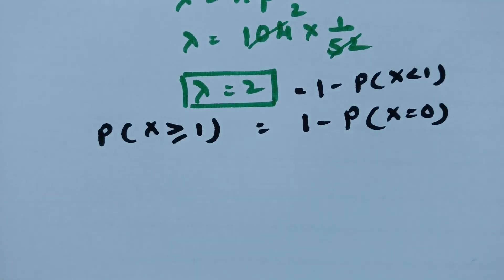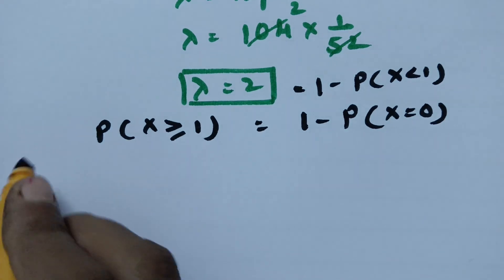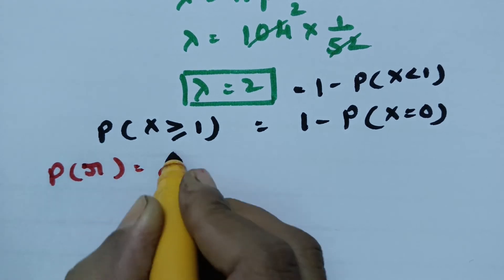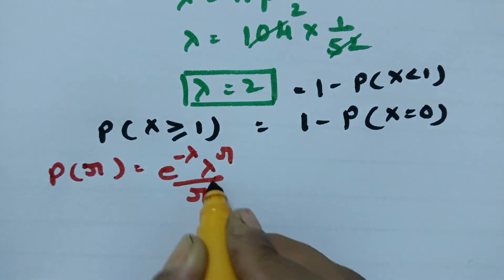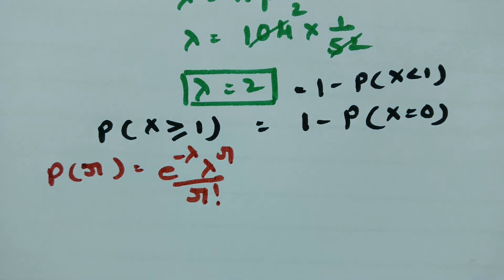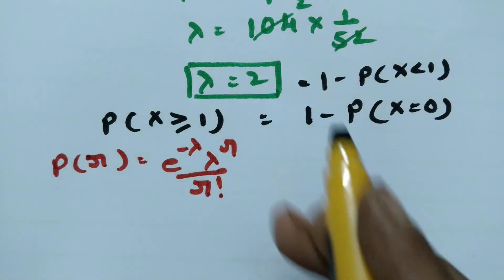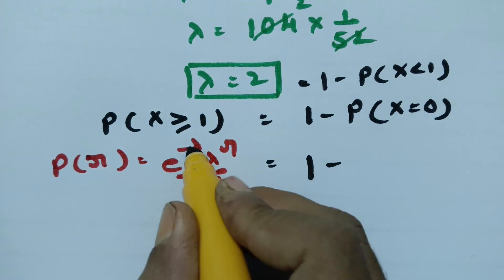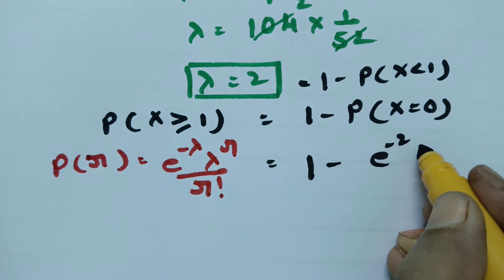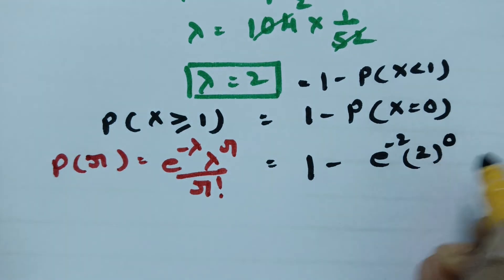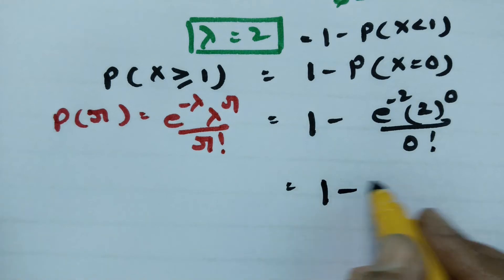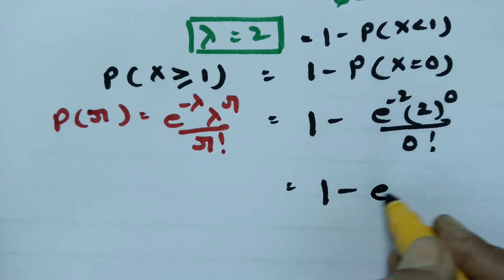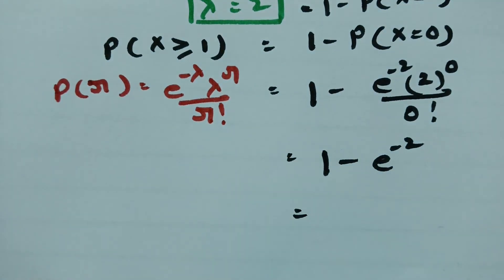According to the Poisson distribution, the formula is: probability that x equals r is equal to e to the power of minus lambda, times lambda to the power of r, divided by r factorial. Our lambda value is 2 and r is equal to 0. Substituting, this becomes e to the power of minus 2, times 2 to the power of 0, divided by 0 factorial. Anything to the power of 0 is 1, and 0 factorial is also equal to 1.